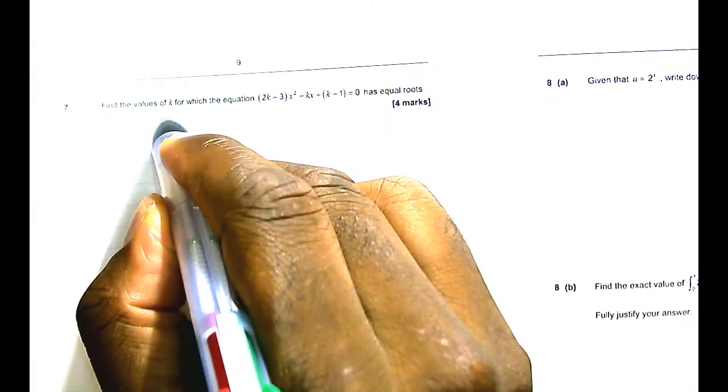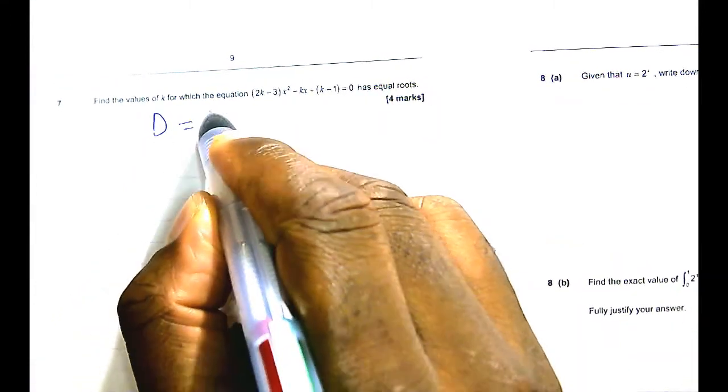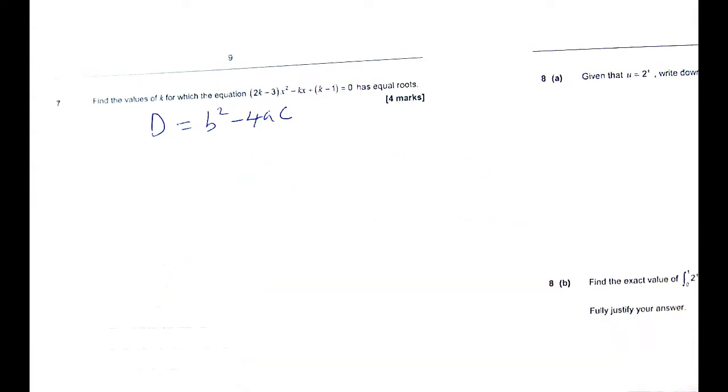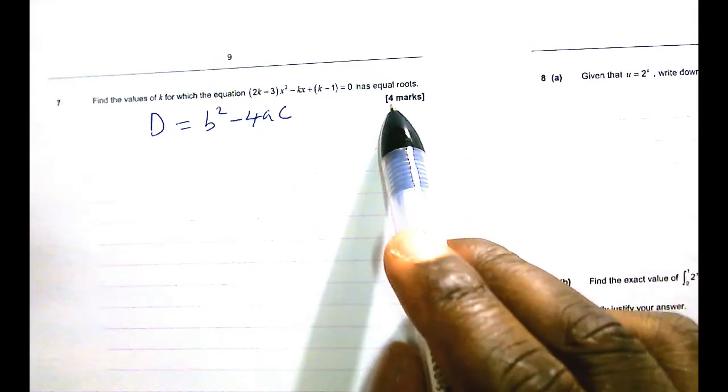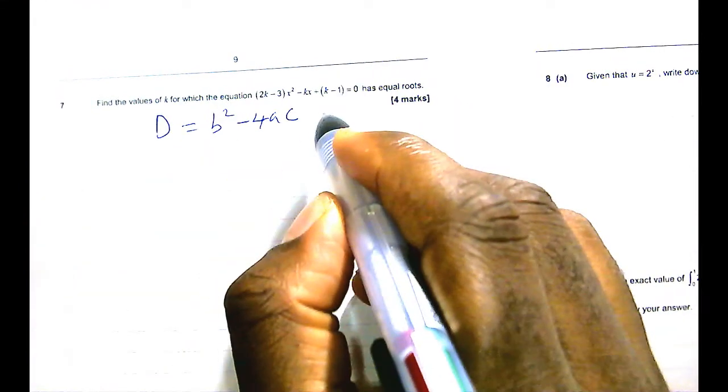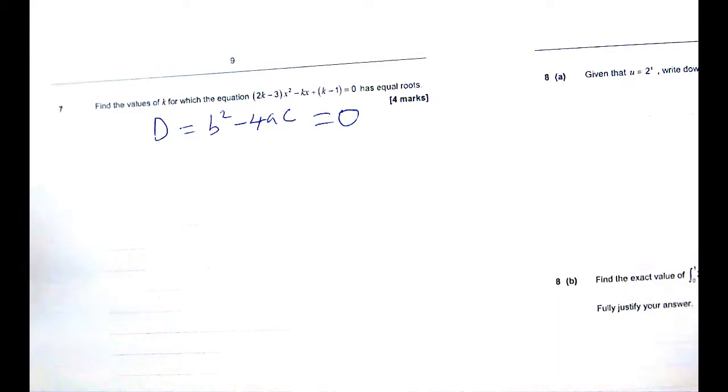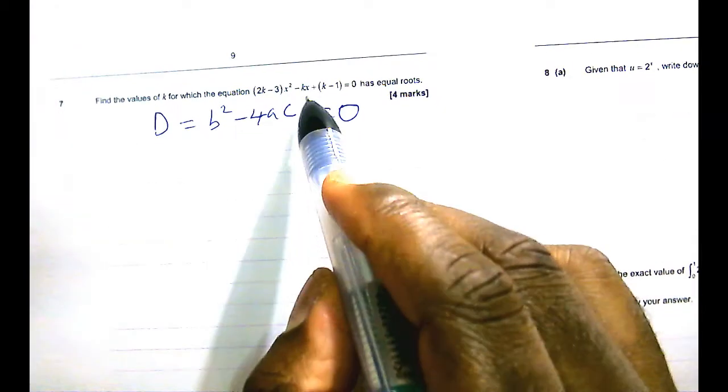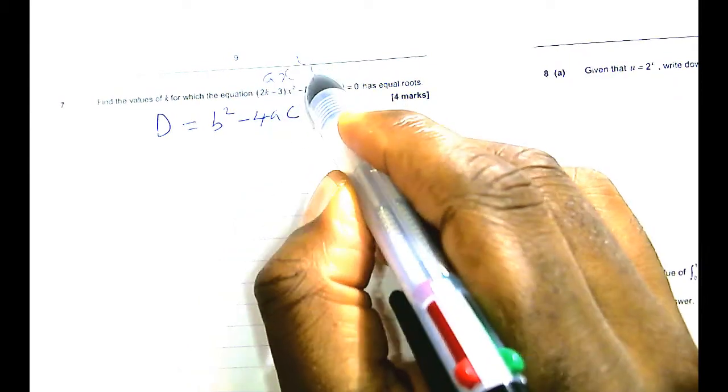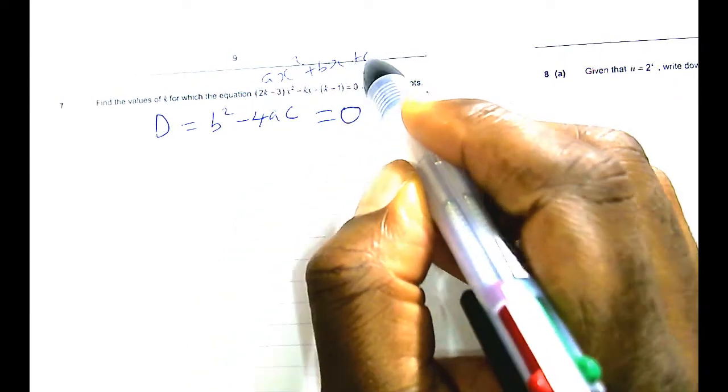D, capital D equals b squared minus 4ac. And in the case of equal roots, you want capital D to be 0. So equal 0. Now your b is that. So this is ax squared plus bx plus c equals 0.